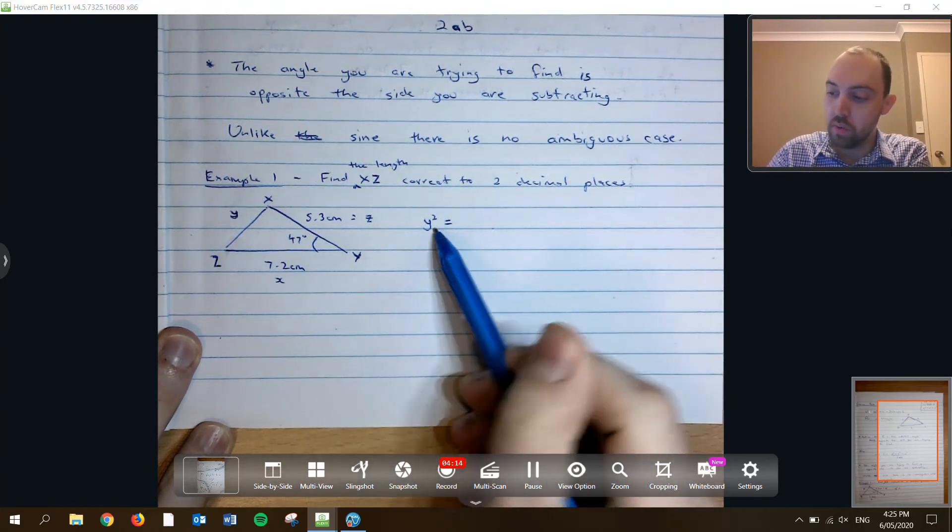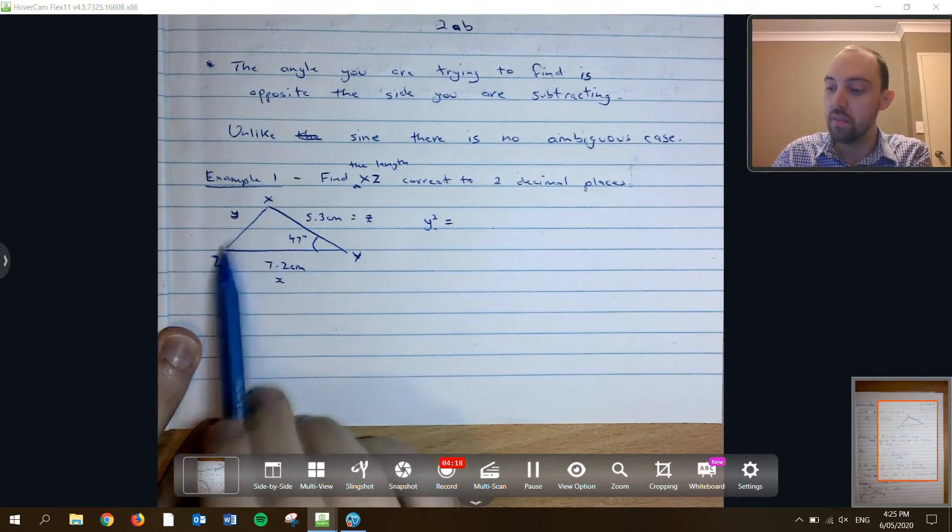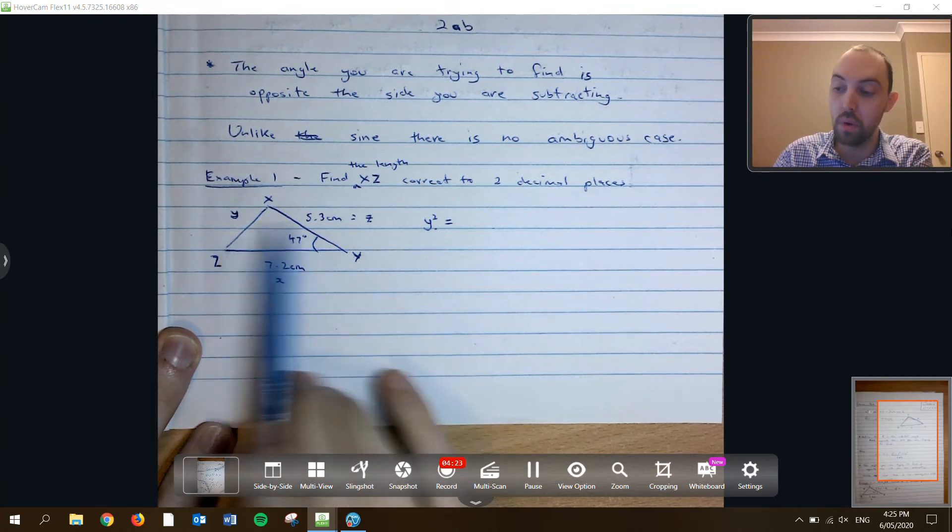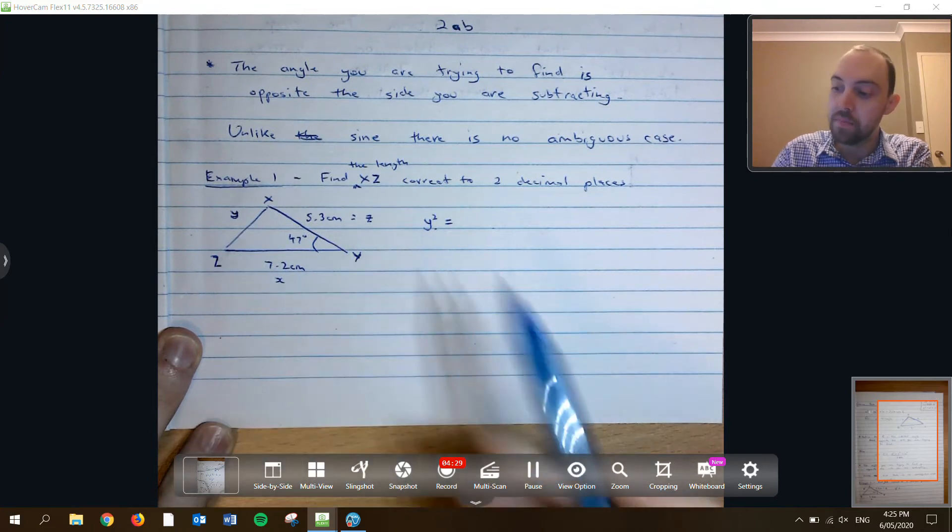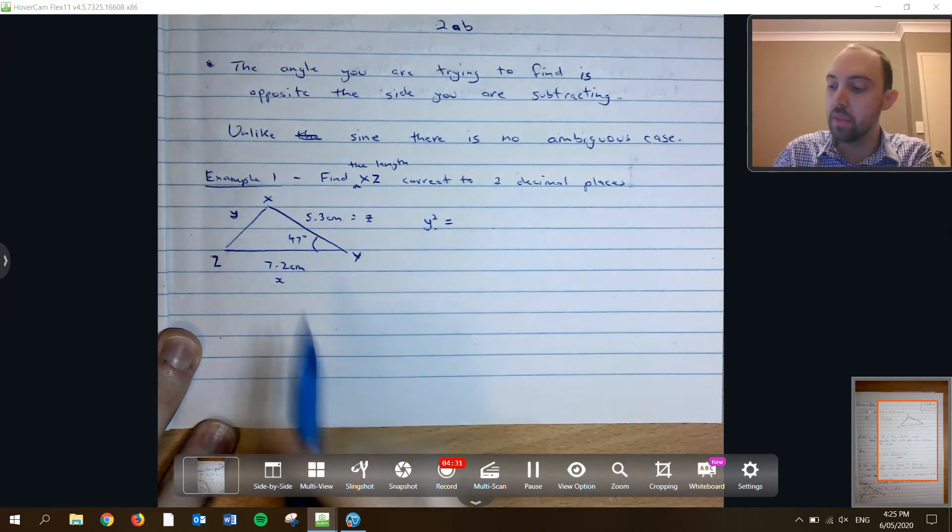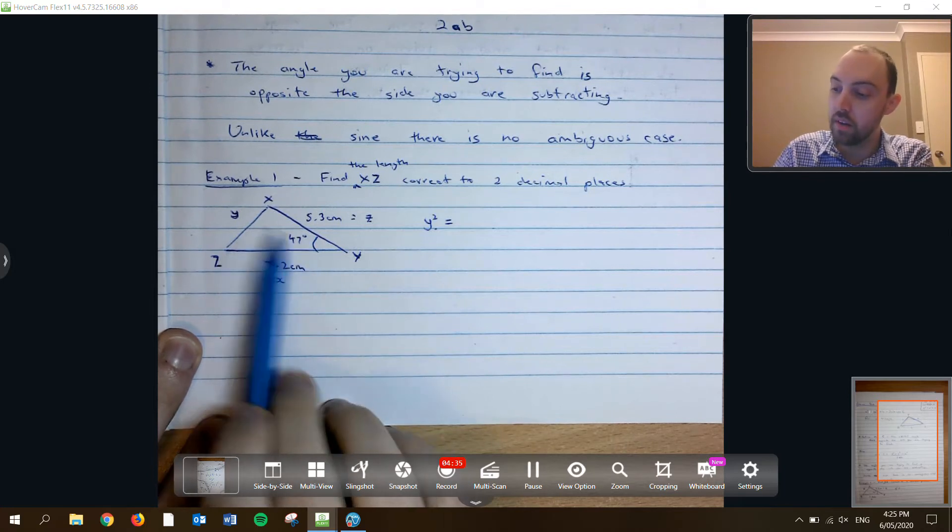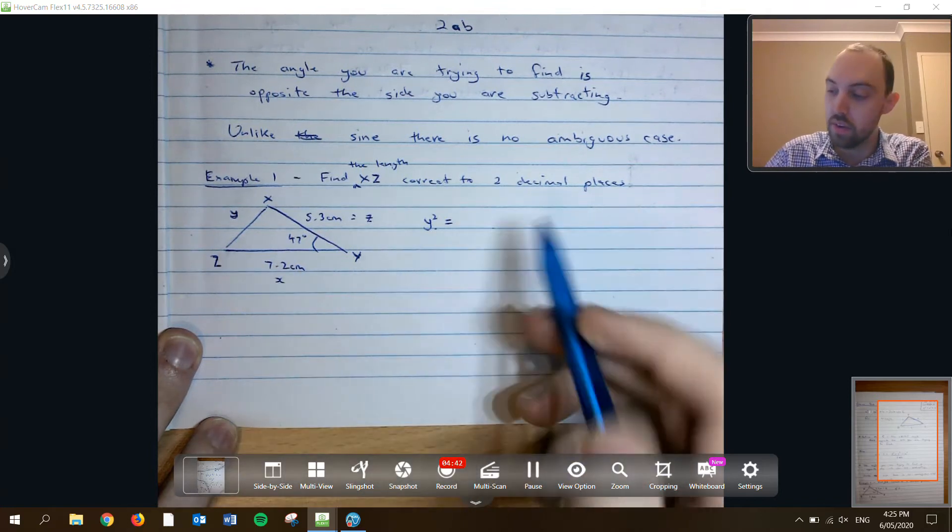So, y squared, the one that I'm trying to find, I've labelled the vertices x, y, and z, and I've labelled the opposite sides, the lower case of those letters. So, z is opposite z, x is opposite x, y is opposite y. It's up to you how you want to label things, or if you want to label them at all. But, y is opposite the 47 degree angle, so when I get up to it, it's going to be cos of 47.